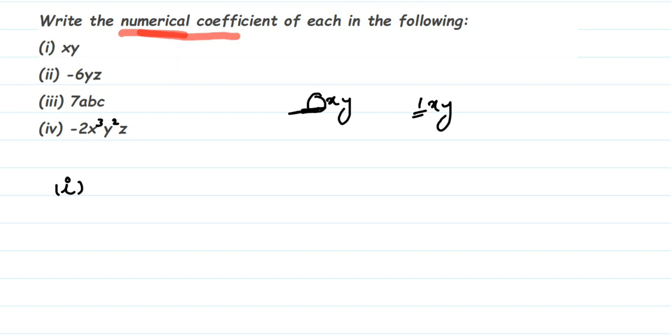So the numerical coefficient of xy will be 1. The second question: we have -6yz. You can see -6 is present—it's a number. So -6, you should take the negative sign also along with this. So -6 will be the numerical coefficient.